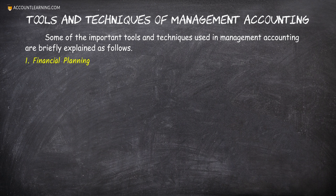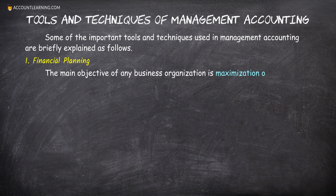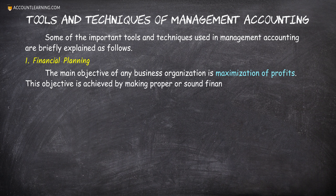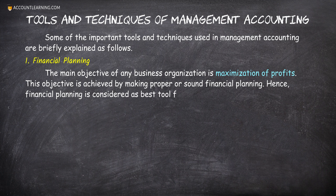1. Financial Planning. The main objective of any business organization is maximization of profits. This objective is achieved by making proper or sound financial planning. Hence, financial planning is considered as the best tool for achieving business objectives.